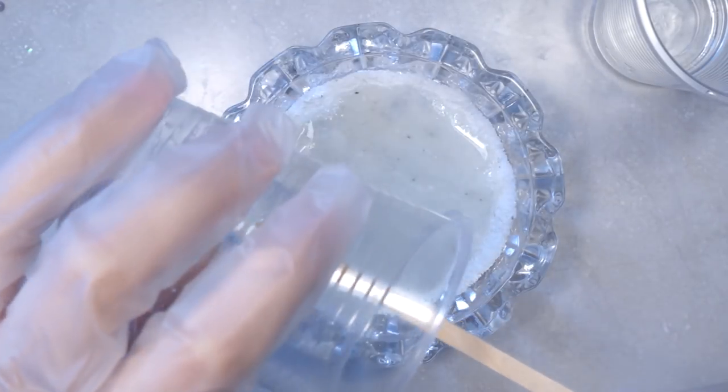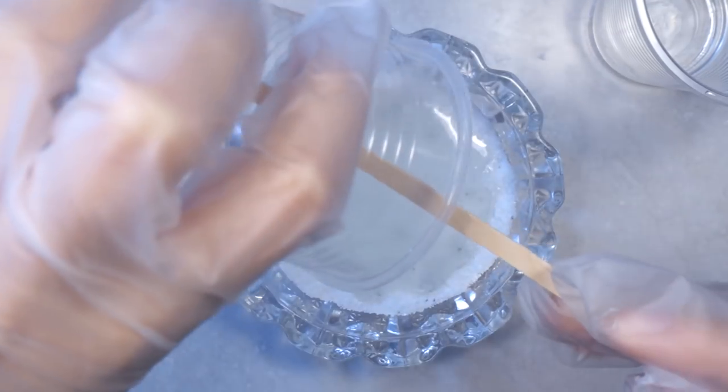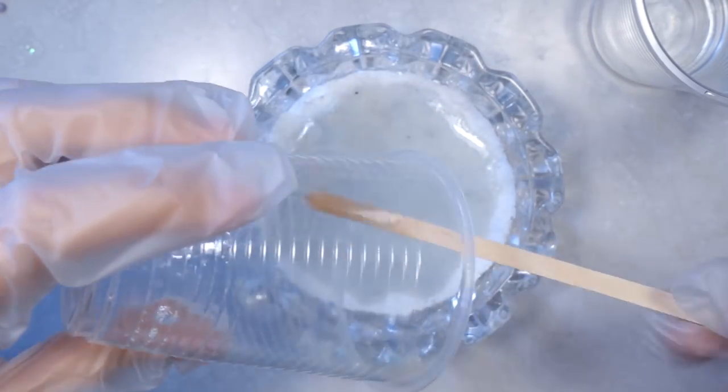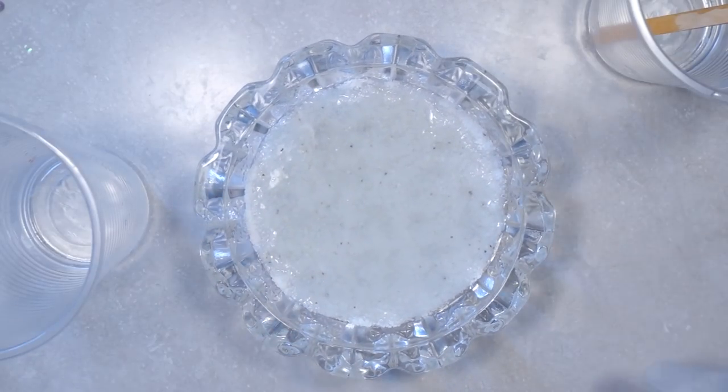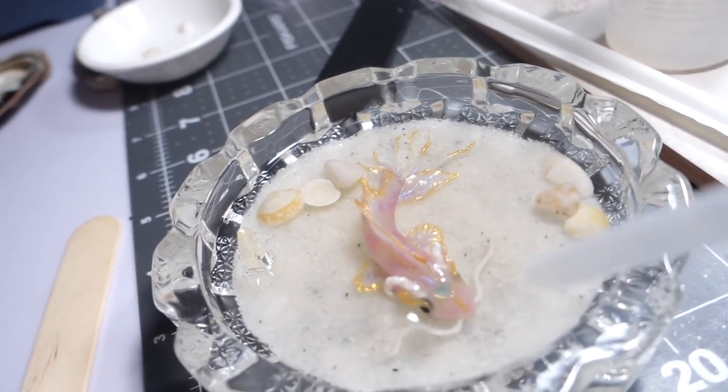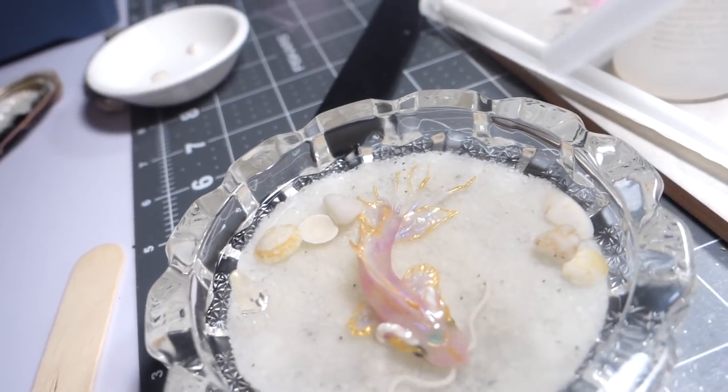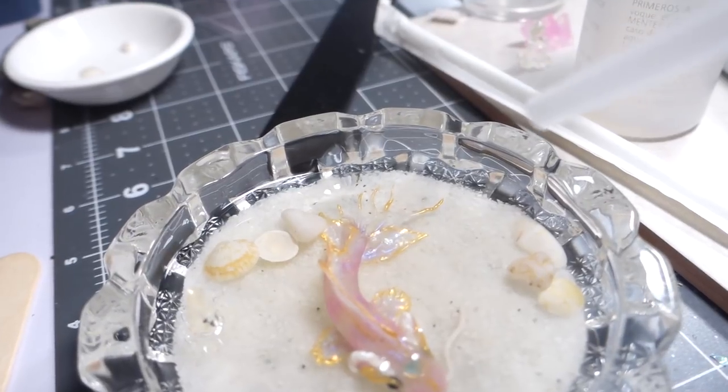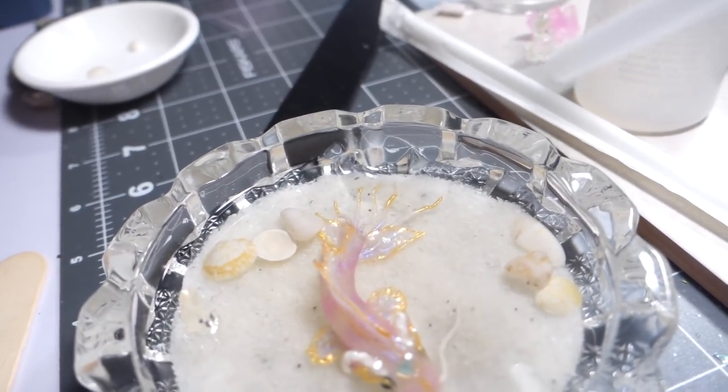Then mix the second cup of resin and pour that in. Make sure you mix more than the first cup because this time you want to cover the whole fish like it's swimming in the water. Use a lighter or straw to blow out the bubbles in the resin.